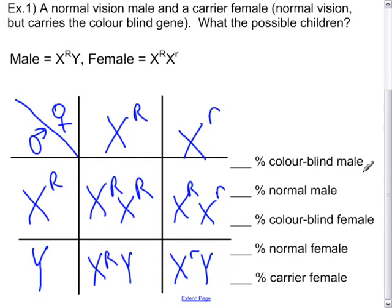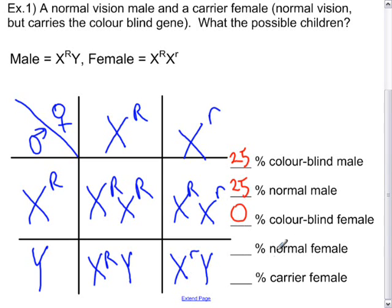From this Punnett square we can show the chances: colorblind male — 1 out of 4, so 25%; normal male — 1 out of 4, so 25%; colorblind female — 0%, none of those females are colorblind; normal female — 1 out of 4, so 25%; and carrier female — 1 out of 4, so 25%.